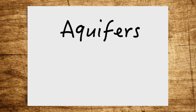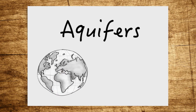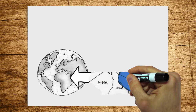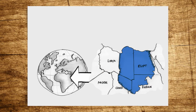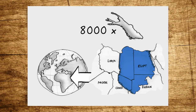They can reach gigantic proportions. In the Nubian Desert, for example, there's an aquifer with a volume of 373,000 square kilometers, which is nearly 8,000 times as large as Lake Constance.